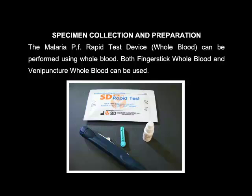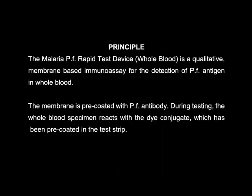The Malaria PF Rapid Test device can be performed using whole blood. Both finger stick whole blood and venipuncture whole blood can be used. The device is a qualitative membrane-based immunoassay for the detection of Plasmodium falciparum antigen in whole blood. The membrane is pre-coated with Plasmodium falciparum antibody.